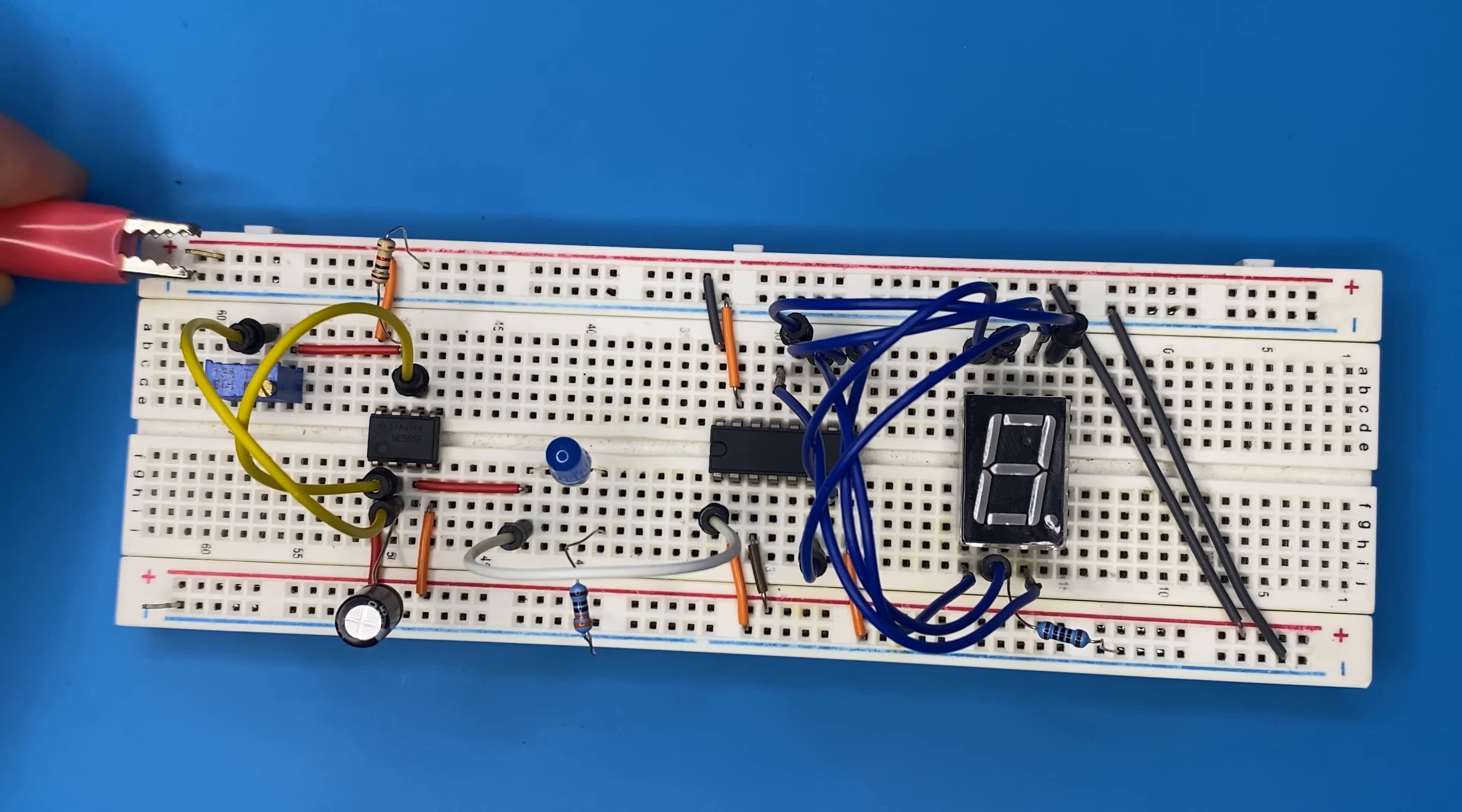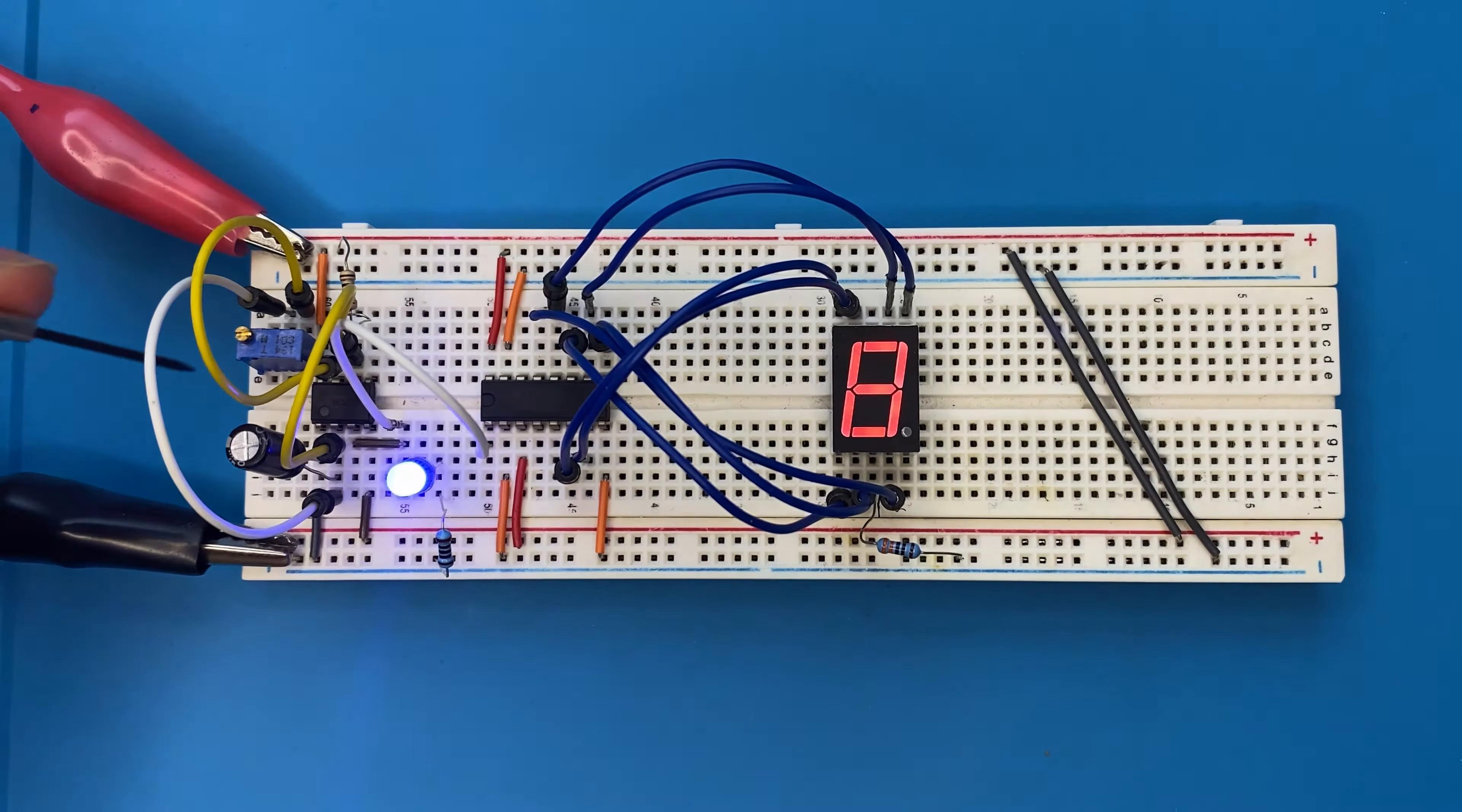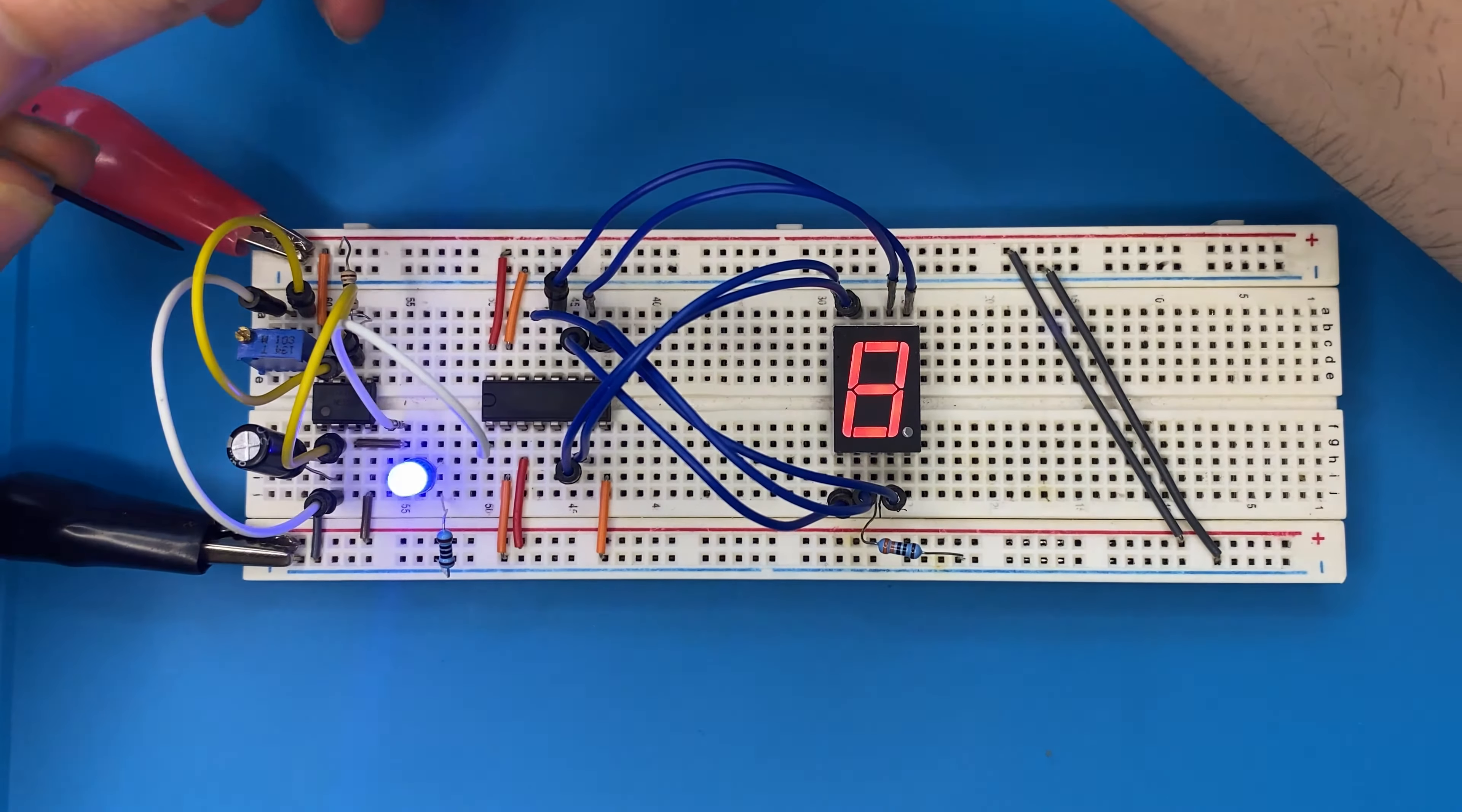Now let's connect our power supply. As you see, the 7-segment display counter works successfully. The 555 timer IC generates a pulse which can increment the decimal numbers on the display, since it is connected to the clock pin of the 4026 IC.